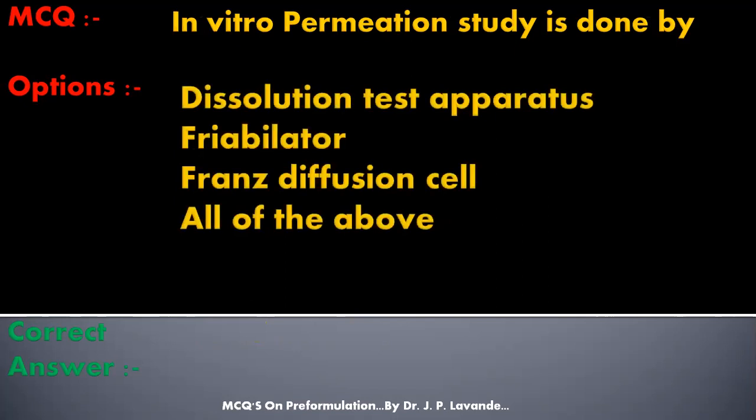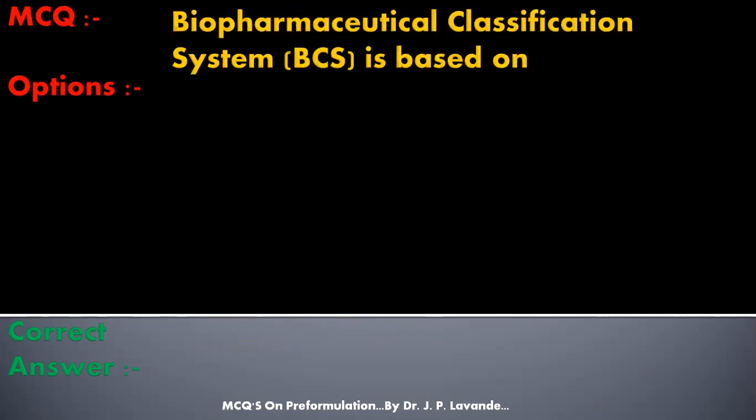Next multiple choice question: In vitro permeation study is done by — options: Dissolution test apparatus, Rialto, Franz diffusion cell, All of the above. Correct answer is Franz diffusion cell.